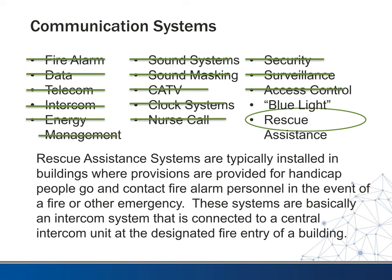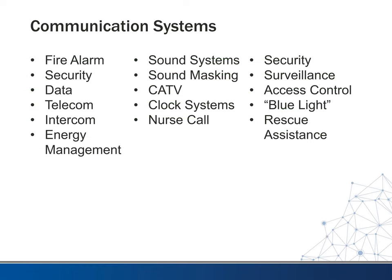Finally, rescue assistance systems are found in multi-story buildings where you anticipate having handicapped people. If they're on an upper floor during a fire, they can't use the elevator, and if they can't use stairs, they go out into the stairwell where these rescue assistance stations are located. There's usually two-way communication so they can talk down to the fire department and request help. This has been a quick overview of the different communication systems that you might see in buildings you're designing.